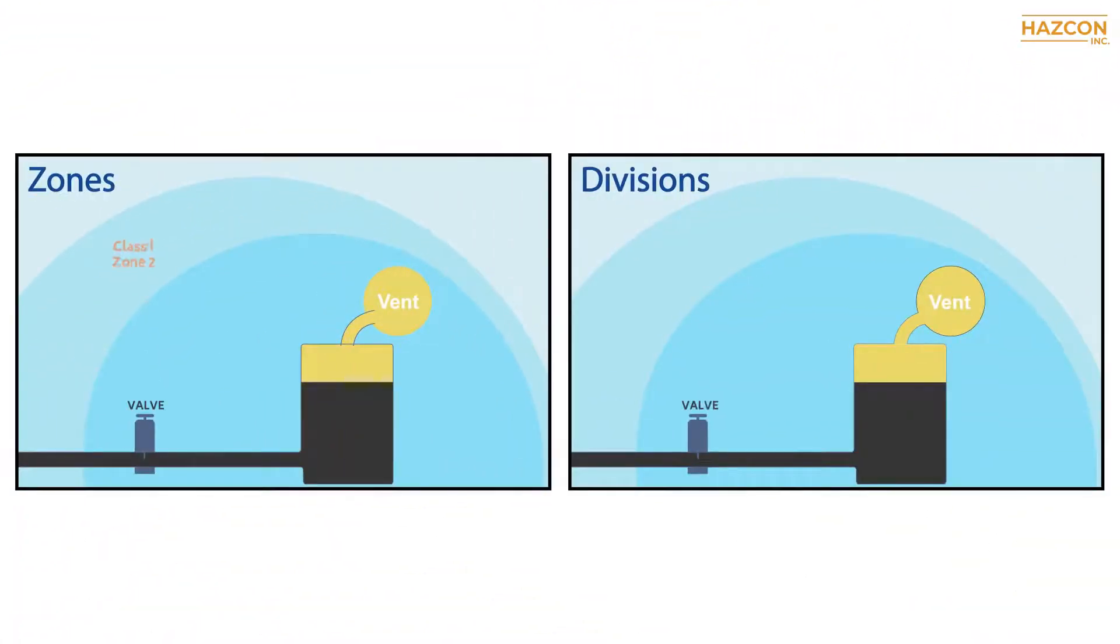The following drawing shows the relation between the two different classified systems for products approved for use in gas explosive atmospheres. First, let's start with products having class division marking.